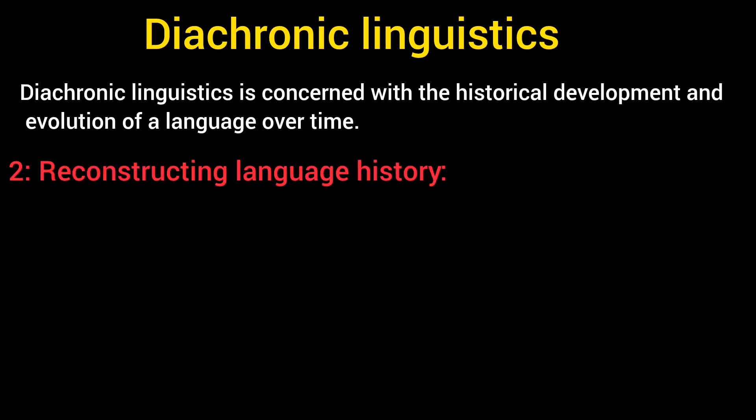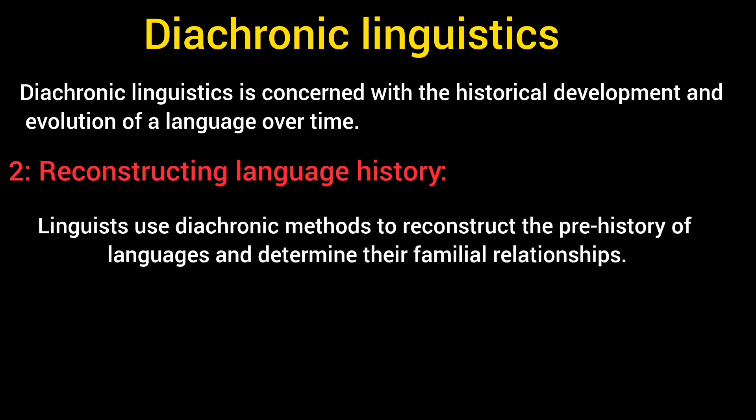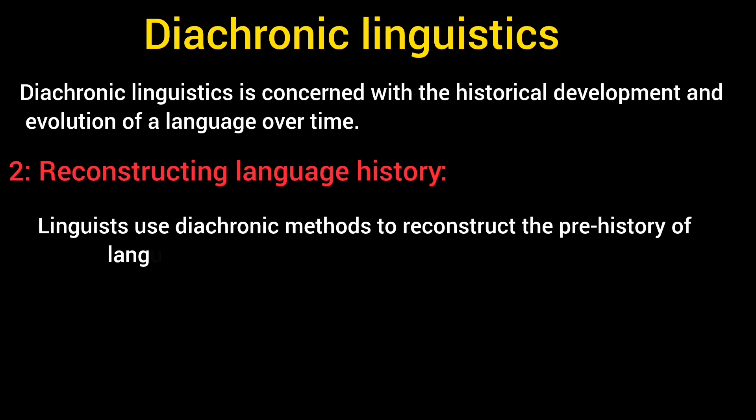The next point is reconstructing language history. Linguists use diachronic methods to reconstruct the prehistory of languages and determine their familial relationships. Reconstructing language history is a fundamental aspect of Diachronic Linguistics — it involves piecing together the evolution of languages by inferring the features of past language stages, and comparing related languages to reconstruct features of their common ancestor.